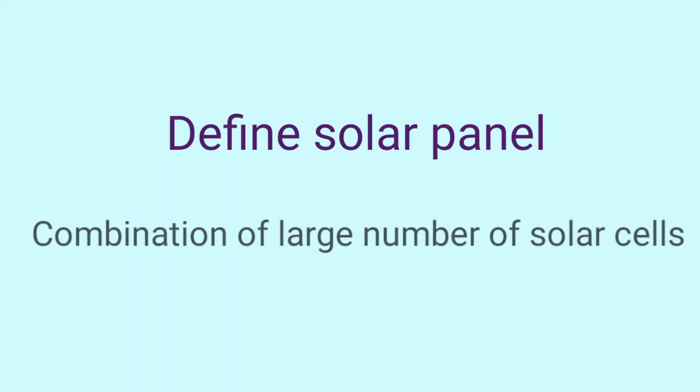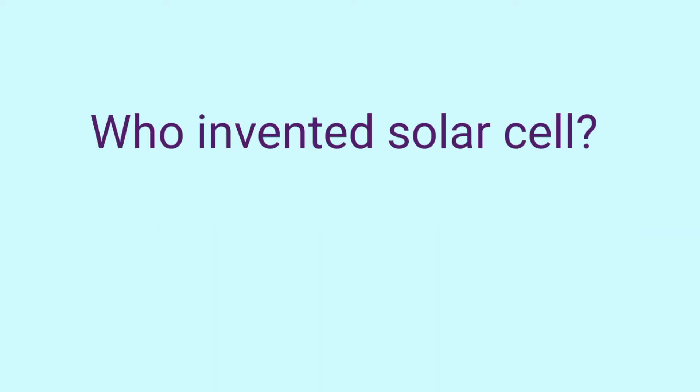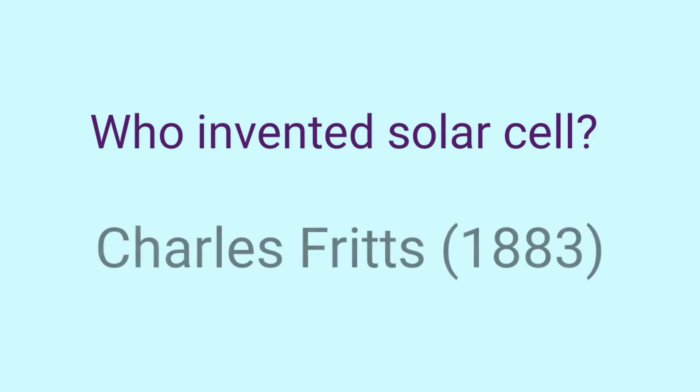Define solar panel. It is the combination of a large number of solar cells. Who invented solar cells? In the year 1883, Charles Fritz using selenium made the first ever solar cell.